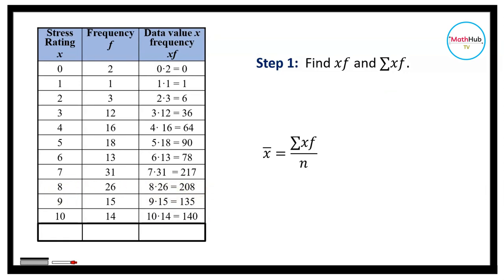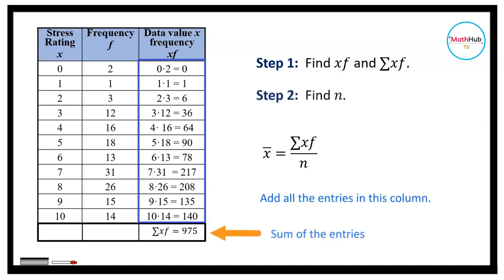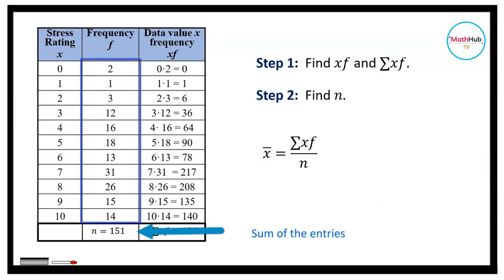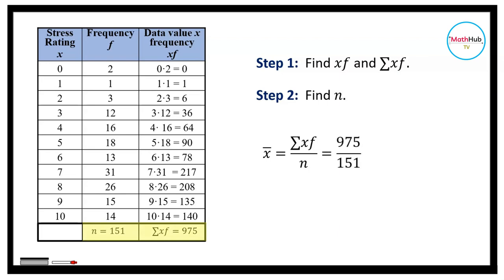To find the mean, after you get the products, sum up all the values and divide by the total frequency — that is, the sum of the frequency column. Therefore, the mean is equal to 975 divided by 151, which is approximately equal to 6.46.